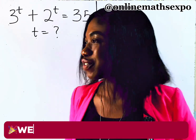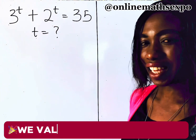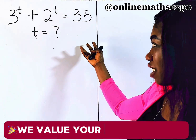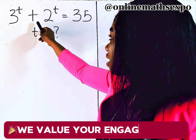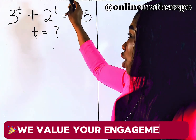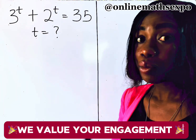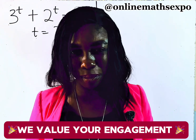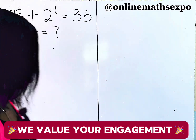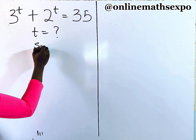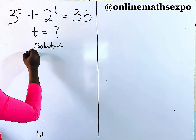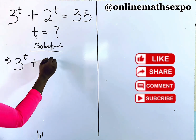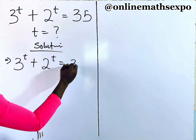Welcome, amazing one, and let's solve this beautiful equation together. When you look at this, you can easily tell the value of T such that when you raise 3 to that power and add it to when you raise 2 to that power, it gives you 35. But in this tutorial, I'm going to help you discover that and more. Let's begin with our solution. We have 3 to the power of T plus 2 to the power of T is equal to 35.